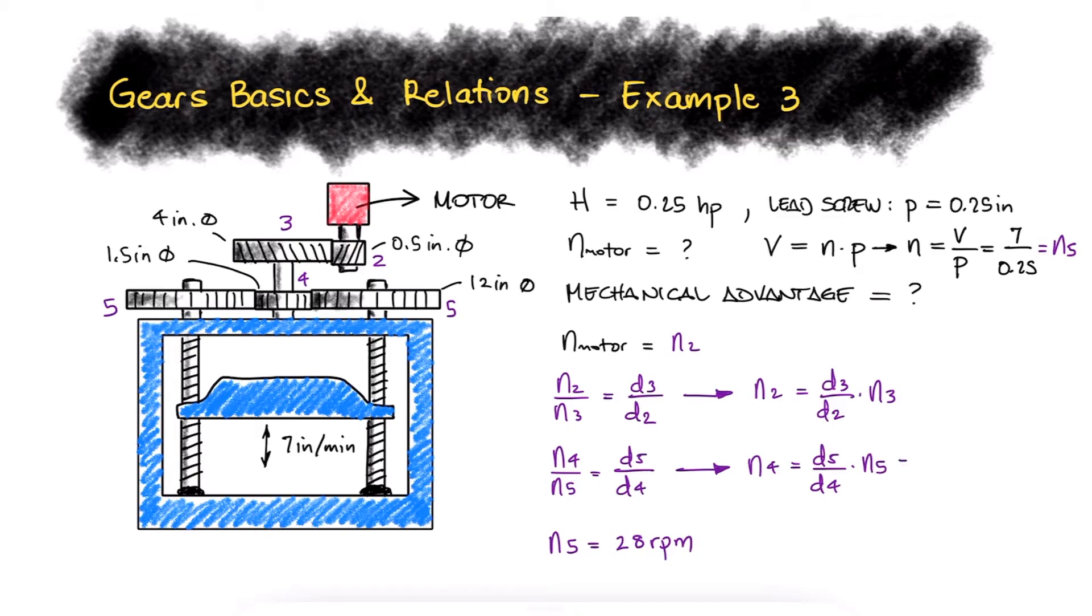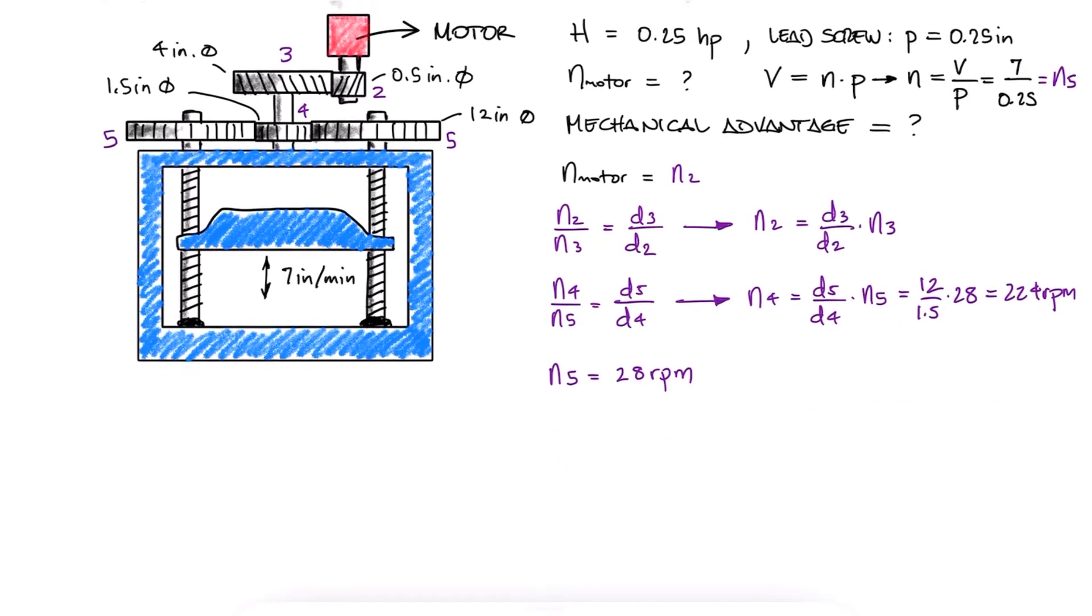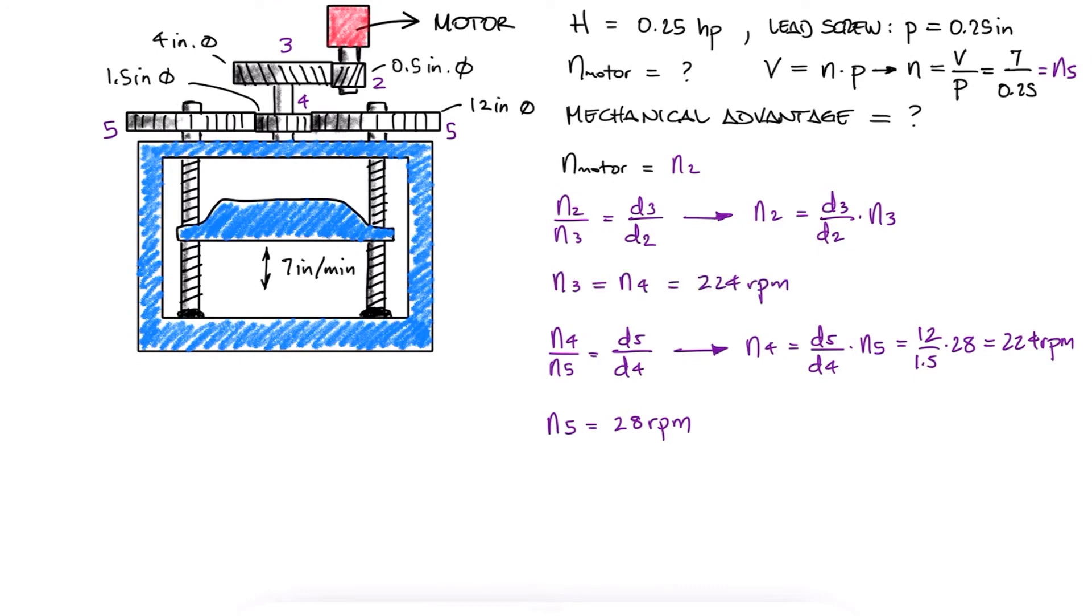Gear 4 is therefore rotating at 224 RPM, as is gear 3, which is located on the same shaft. With this information we see that gear 2 is 1792 RPMs, which is also the speed of the motor.